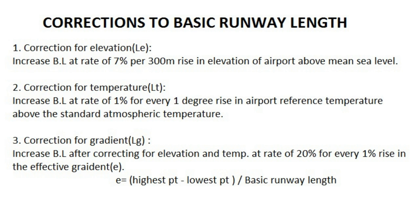The third correction is for gradient. We need the effective gradient, which is the maximum difference in elevation between the highest and the lowest point of the runway divided by the total length of the runway. The Federal Aviation Administration of the USA states that after correcting basic runway length for elevation and temperature, it should be increased at the rate of 20% for every 1% of the effective gradient. This is because as the gradient becomes steeper, the aircraft requires more energy and a longer runway to attain the required ground speed and generate the required lift.